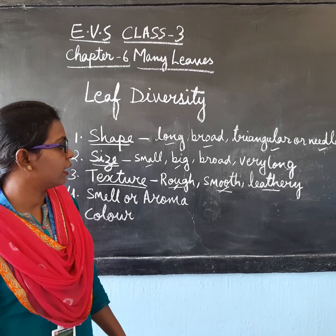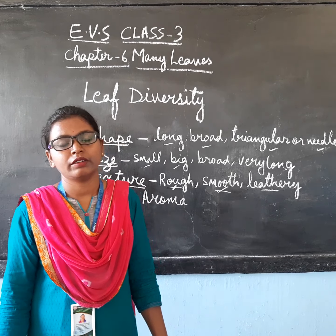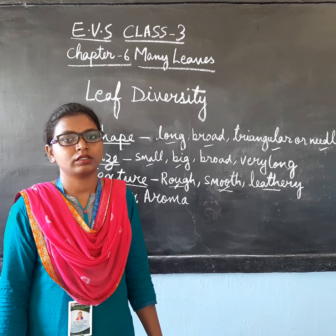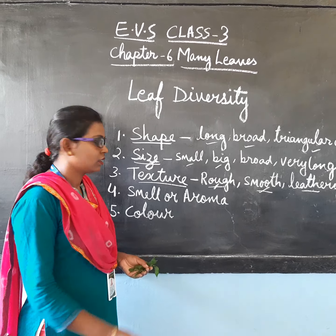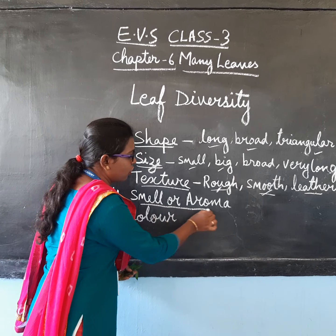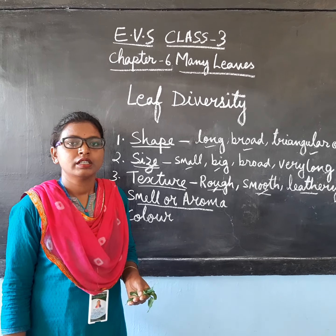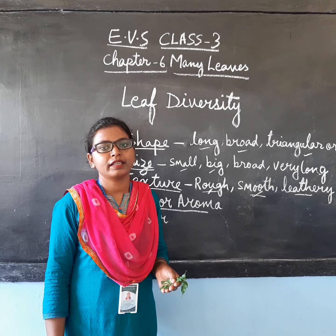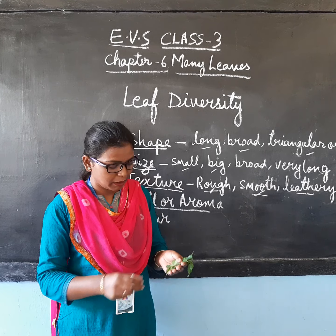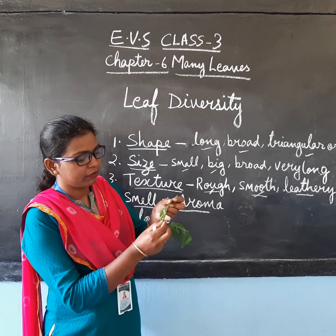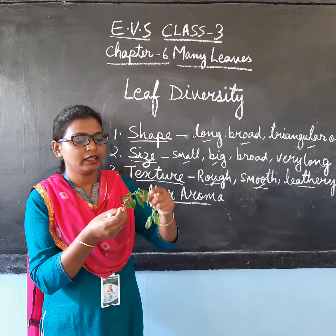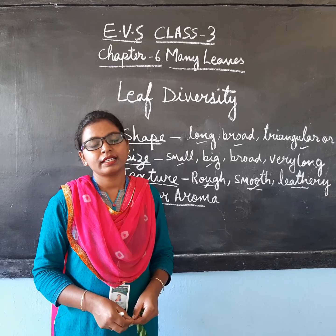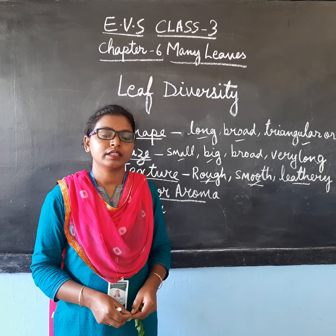Then next is the leathery plant leaf — it is very leathery to touch. Fourth is smell or aroma. Some of the leaves have a peculiar smell and are identified by their smell. Examples are the mint leaf, curry patta, and coriander leaves. These leaves are commonly used in our kitchens.